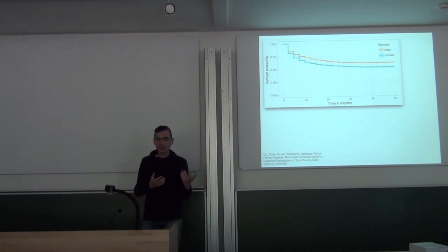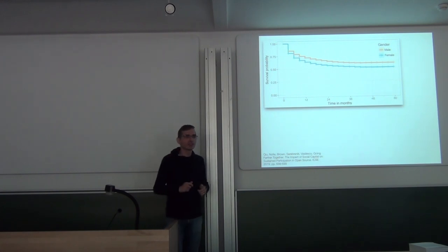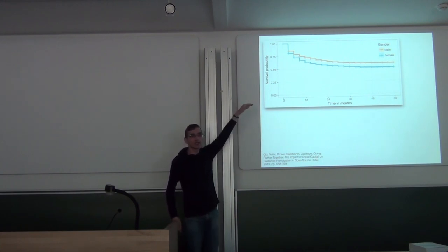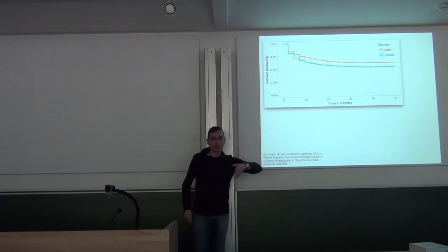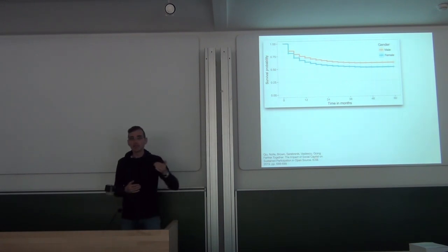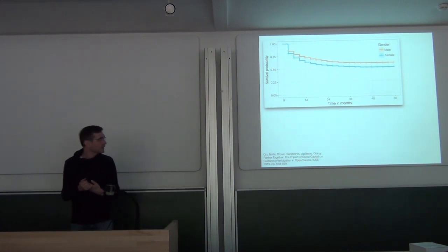So the work on the relation between gender and duration of engagement started by the following observation. This is a survival plot. How many of you have seen survival plots in the past? Good. Just for the benefit of those who have not seen them, the x-axis represents time in months, the y-axis represents percentage of those that are still contributing to the project x months after their first contribution. You see here that the curve corresponding to men is higher than the curve corresponding to women. So we observed that women disengage more often.